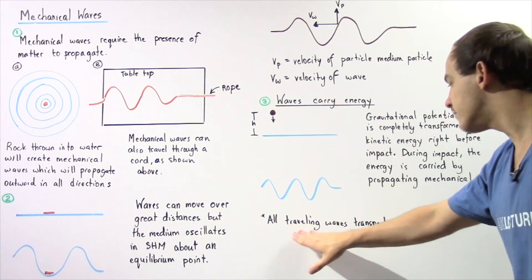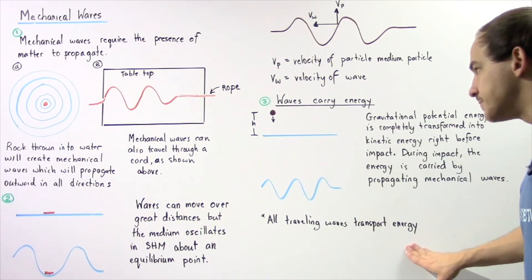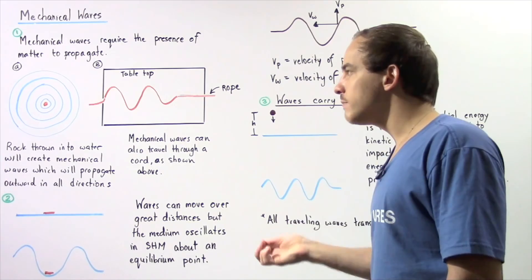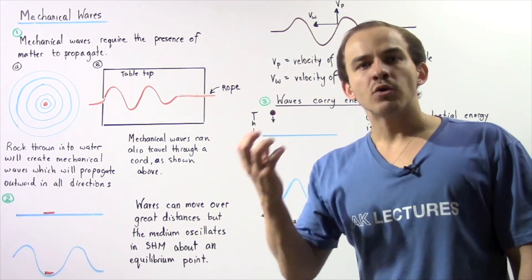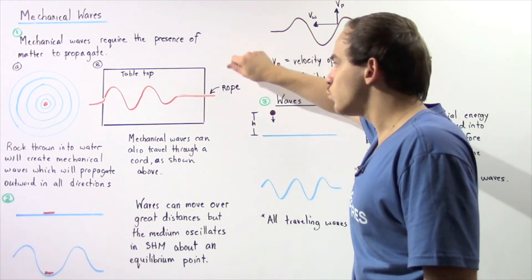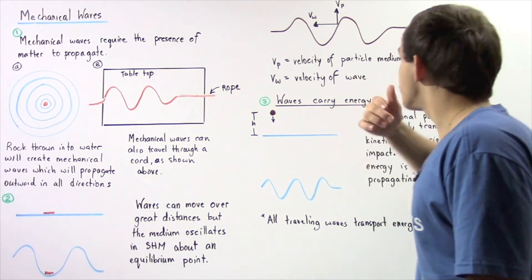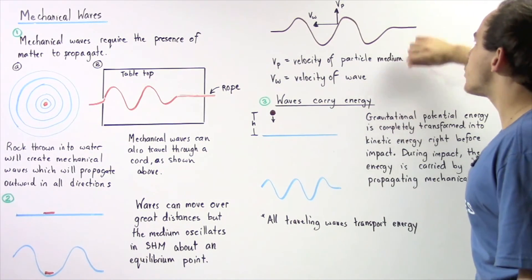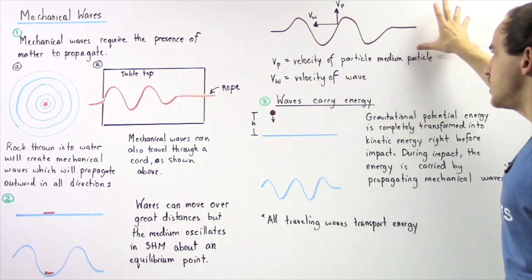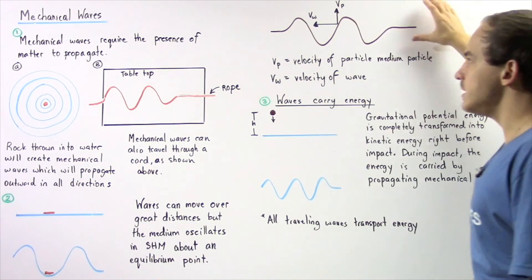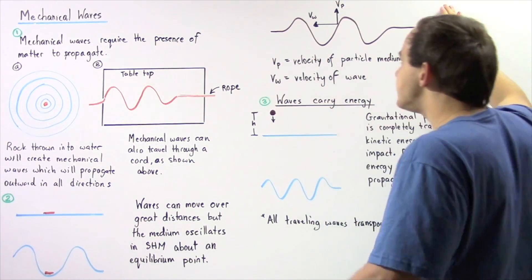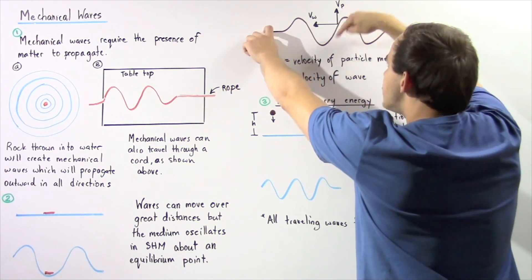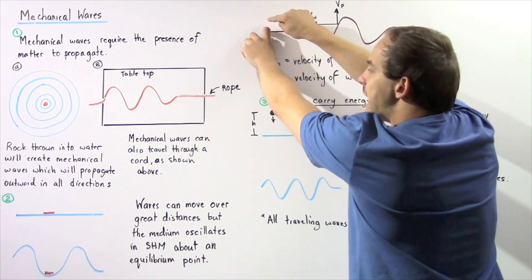All types of traveling waves transport energy. In example B with the rope, the energy comes from our hand that forces the wave to propagate. When we force our rope to propagate, we are transforming energy, and that energy is transported via the mechanical wave. So if someone else is holding the other end of the rope, they will feel that energy when the wave reaches that other end.